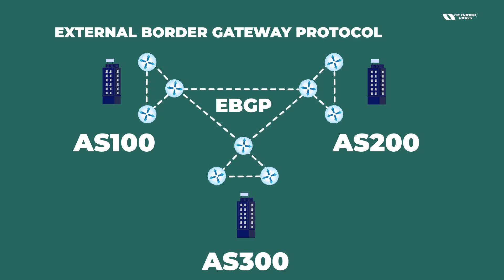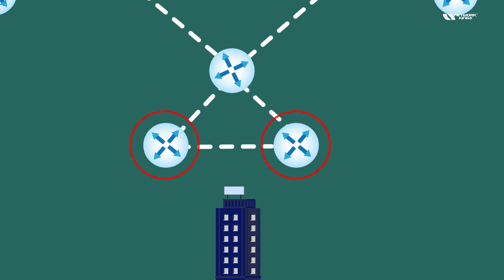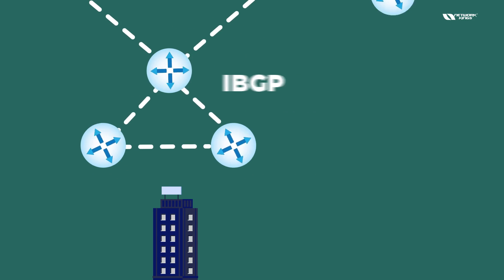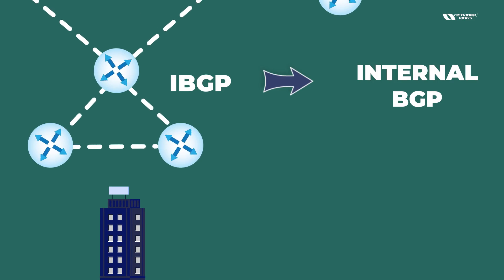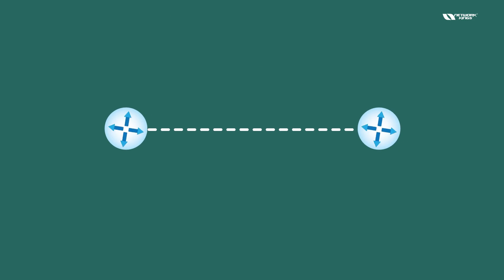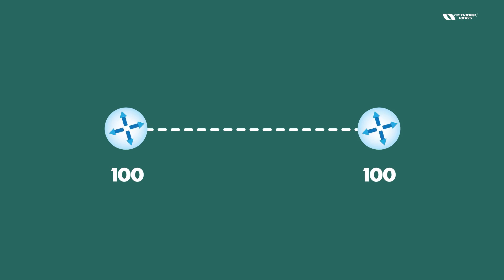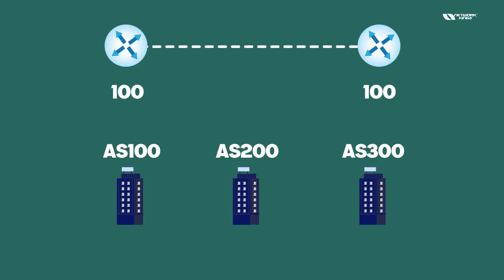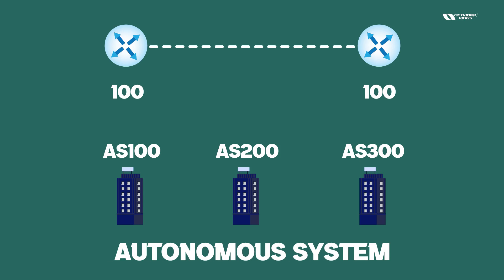When you are running BGP between all your locations, this is called iBGP — Internal BGP. When two routers have the same AS number, like 100 and 100, only then can you run iBGP. It means all companies have their own unique AS number. This AS number stands for Autonomous System — that is what you need to understand first.